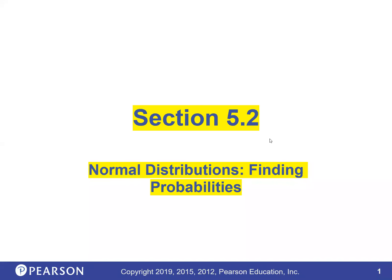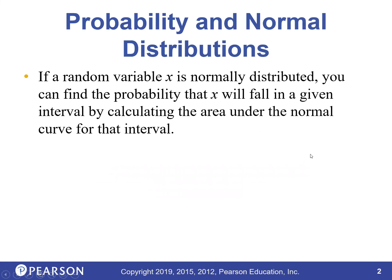We are starting Section 5.2 on normal distributions, finding probabilities. In 5.1 we were finding the area underneath the curve. Now we're going to try to find probabilities. Remember back in chapters three and four, probabilities were like: if a dice rolls, what's the chance of getting a four? It was one-sixth. Now we're going to get a little more complicated using the normal distribution.